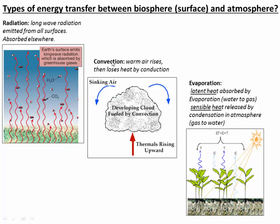Convection or thermals is the idea that warm air heats up near the surface of Earth, then rises upward and convects that heat up into the upper atmosphere where it's lost by conduction. The other mechanism is evaporation — it takes solar energy to convert water from a liquid to a gas, so energy gets stored as water is converted. That water vapor then goes up into the atmosphere and condenses, releasing energy as it condenses. The technical names for these are latent heat, which is absorbed during evaporation, and sensible heat, which is released during condensation.